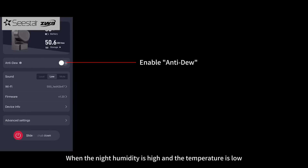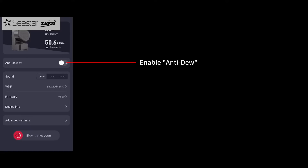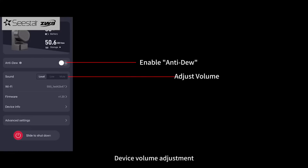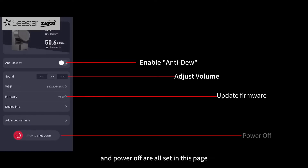When the night humidity is high and the temperature is low, enable anti-dew to prevent the lens from fogging and condensation. Device volume adjustment, firmware update, and power off are all set in this page.